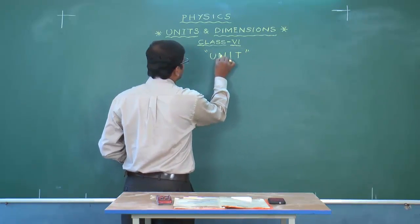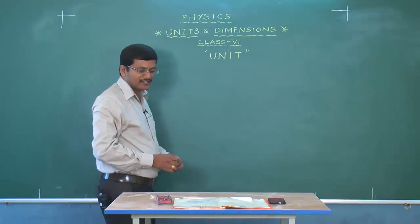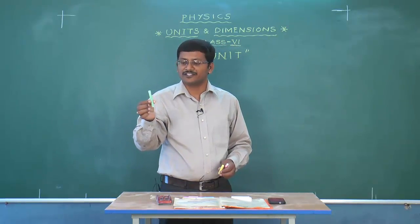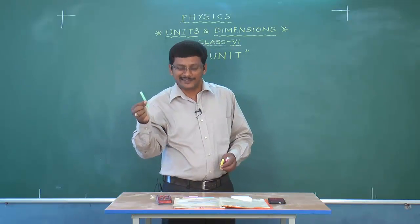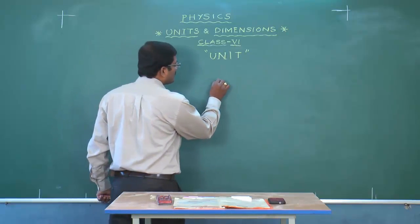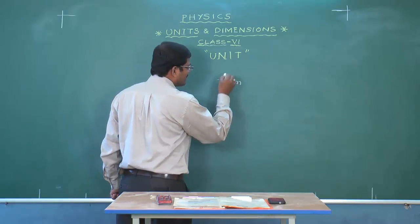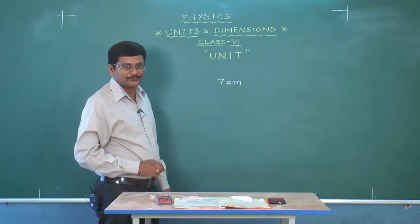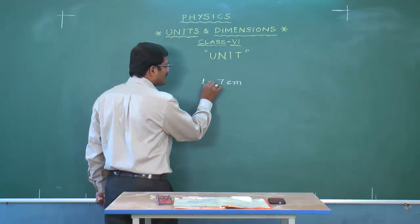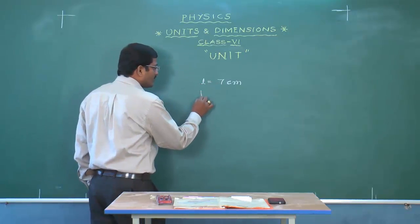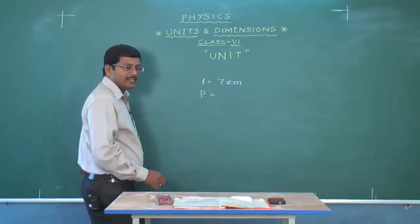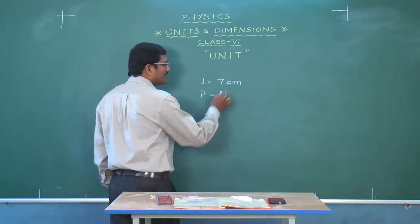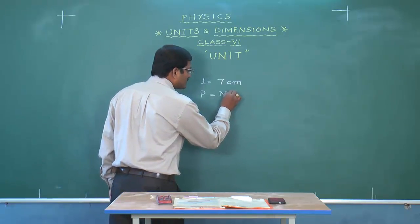So what do we mean by unit? For example, if I want to find out the length of this piece of chalk, I take a scale, measure it, and get approximately 7 centimeters. So the length L = 7 centimeters is a physical quantity. Here 7 is the numerical value, denoted by N, and centimeter is the unit, denoted by U.